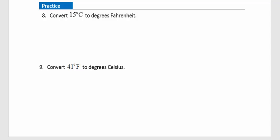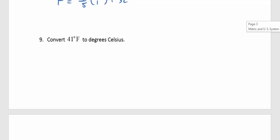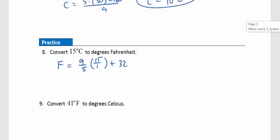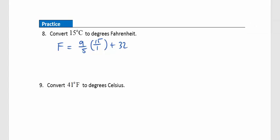Practice question 8: Converting Celsius to Fahrenheit. F = (9/5) × 15 + 32. Write 15 as a fraction over 1 and multiply by 9/5. The common factor of 5 divides out: 1 in the denominator and 3 in the numerator, giving 9 × 3 = 27. So 27 plus 32 gives a final temperature of 59 degrees Fahrenheit.